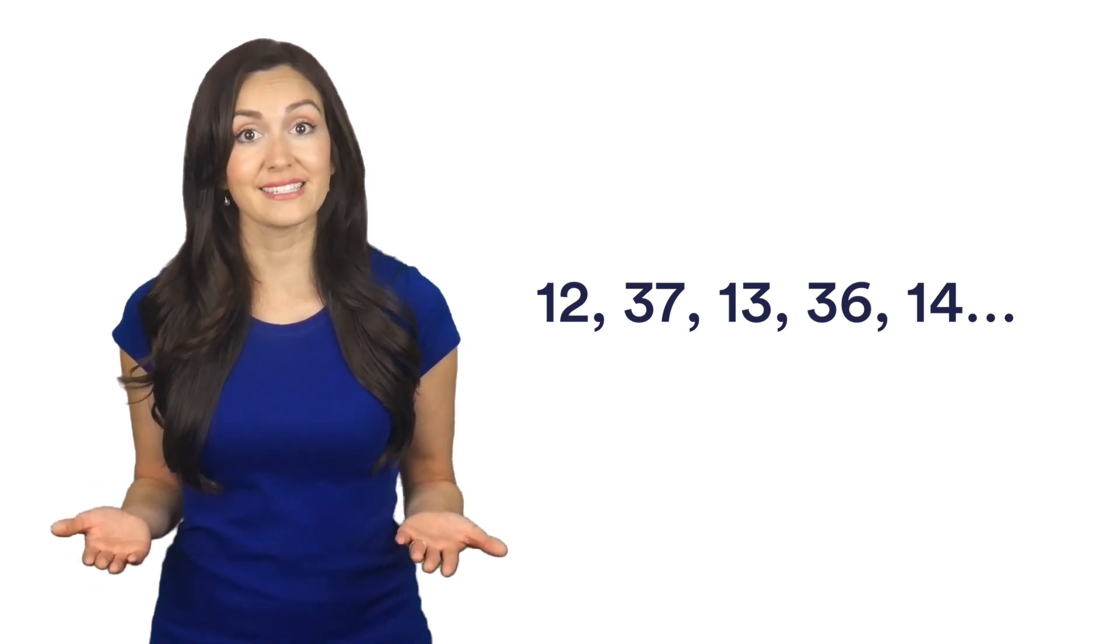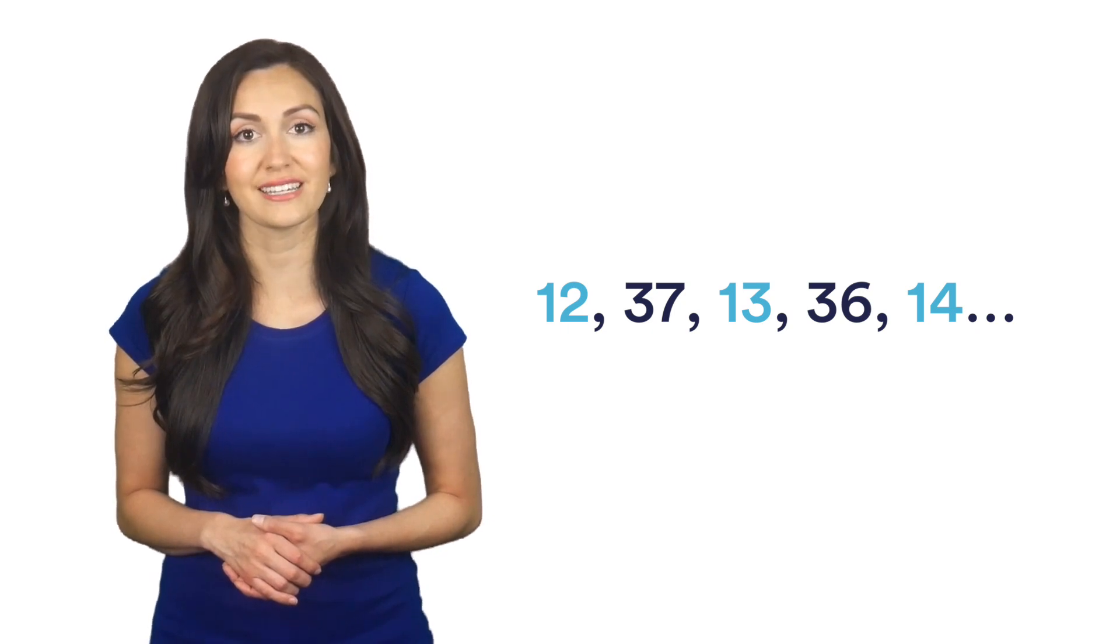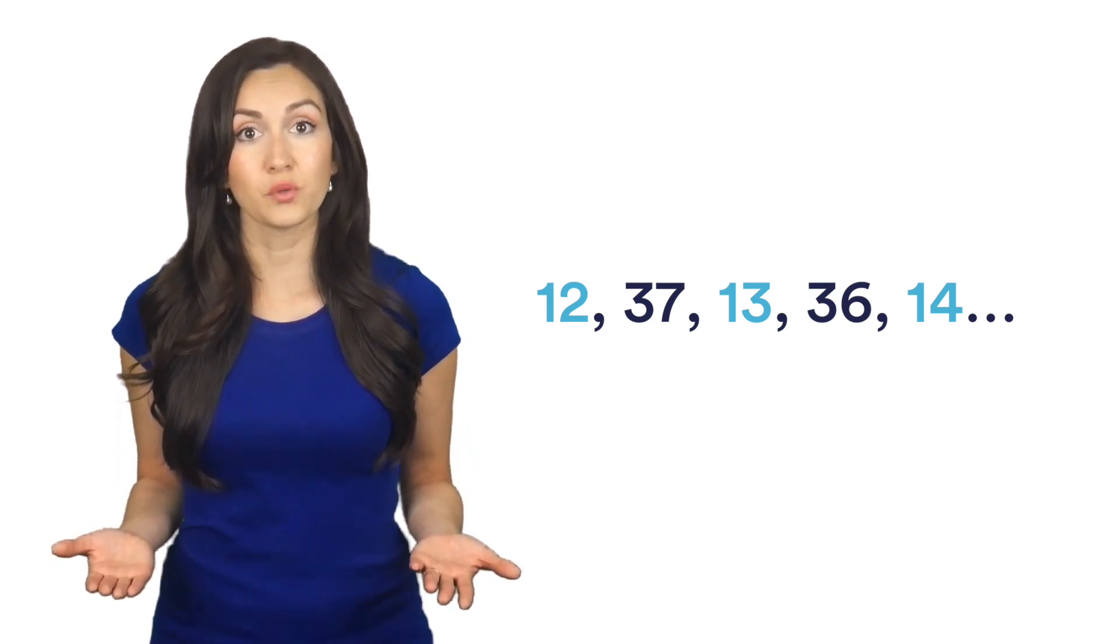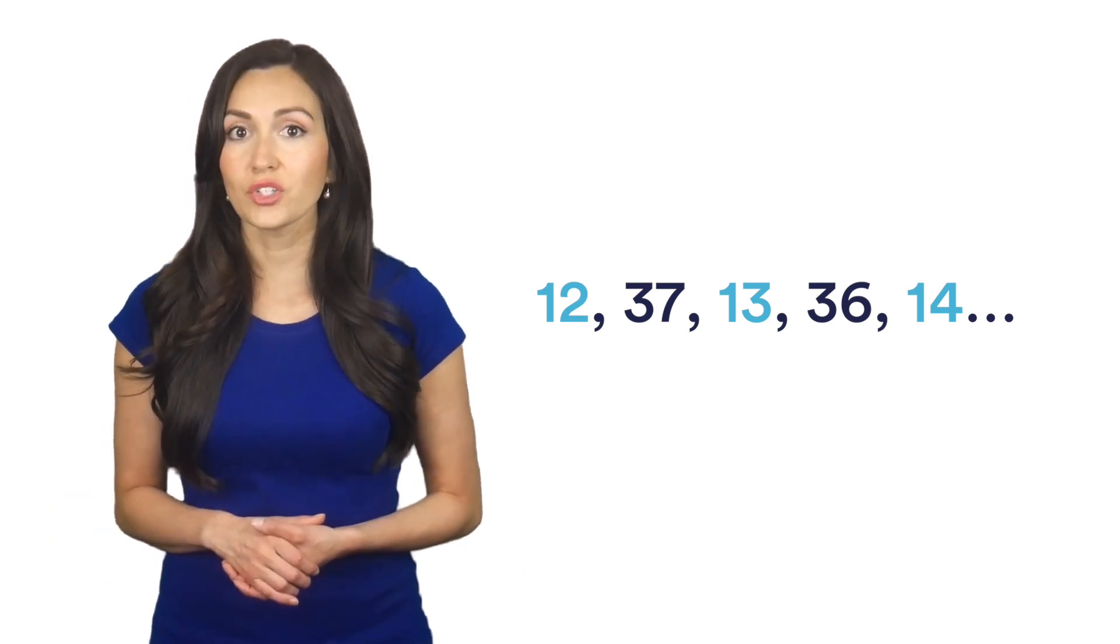12, 37, 13, 36, 14. One sequence is counting up from 12 and the other counting down from 37 in an alternating pattern.